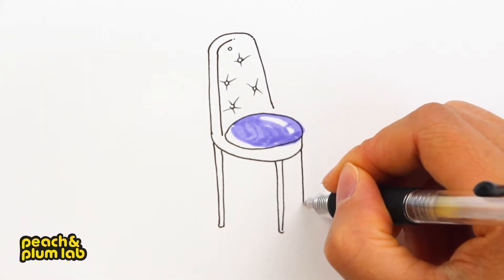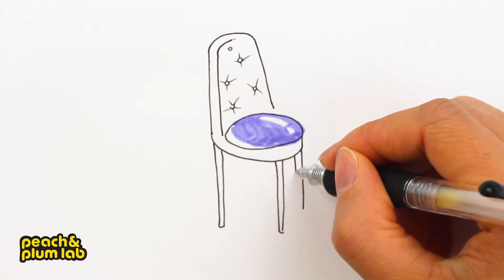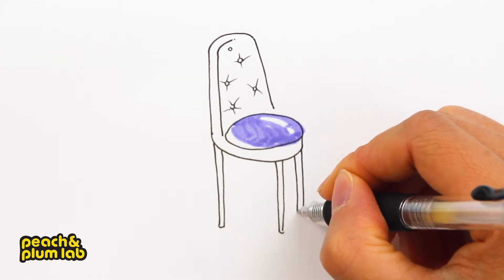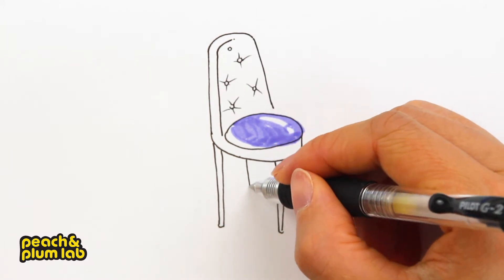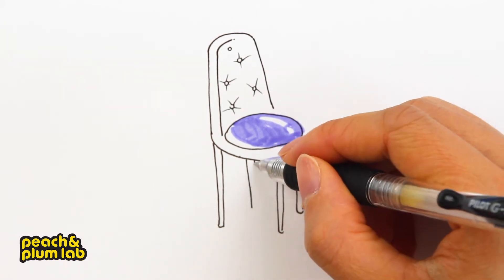So now we finish the first two in the front. We're going to draw the other two legs in the back. Because of perspective, the legs in the back are actually shorter than the legs in the front, so make sure you don't draw them the same height.